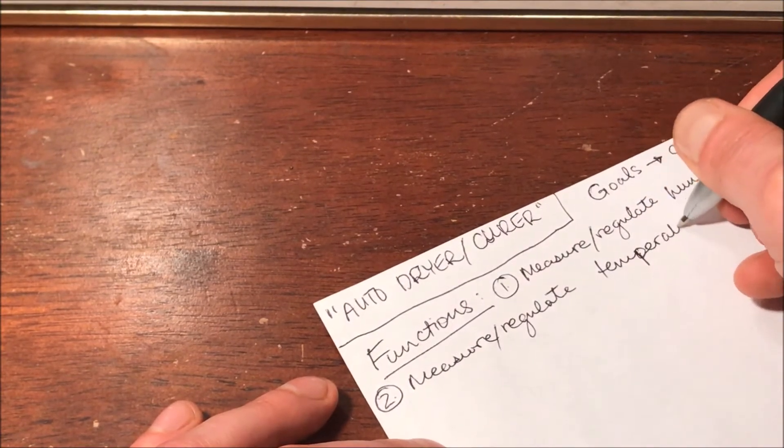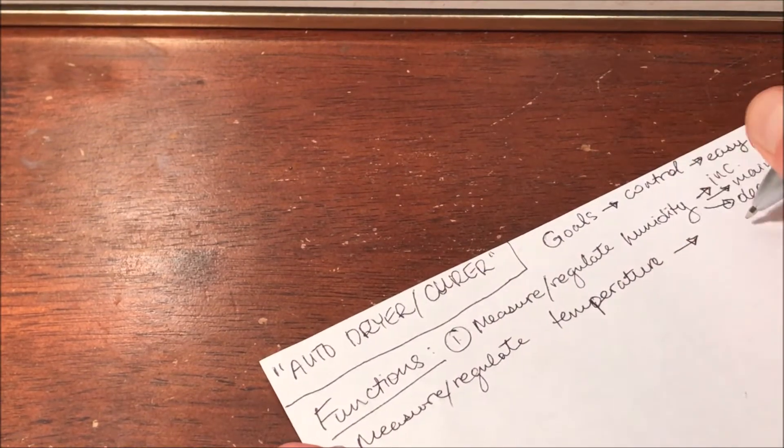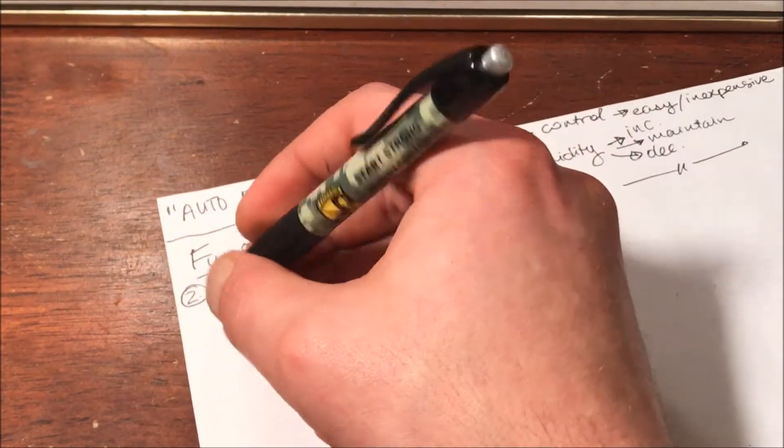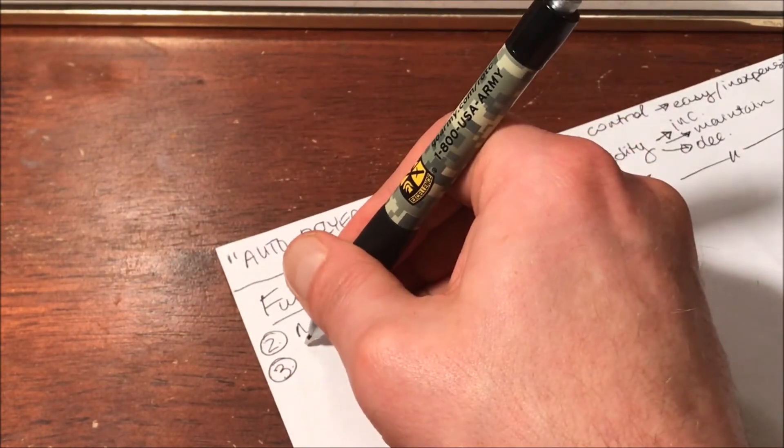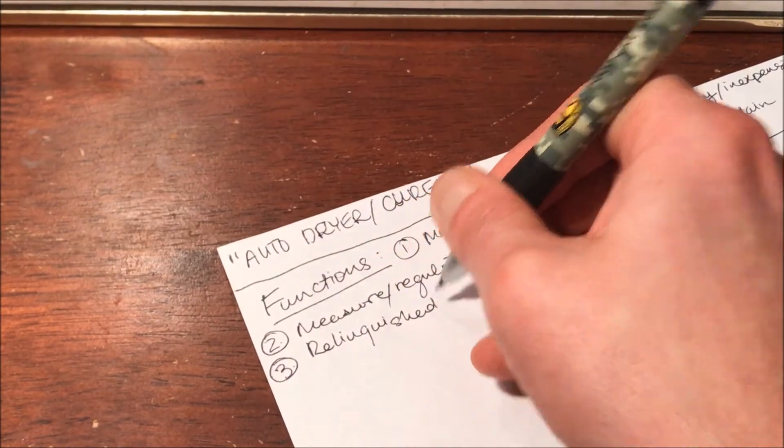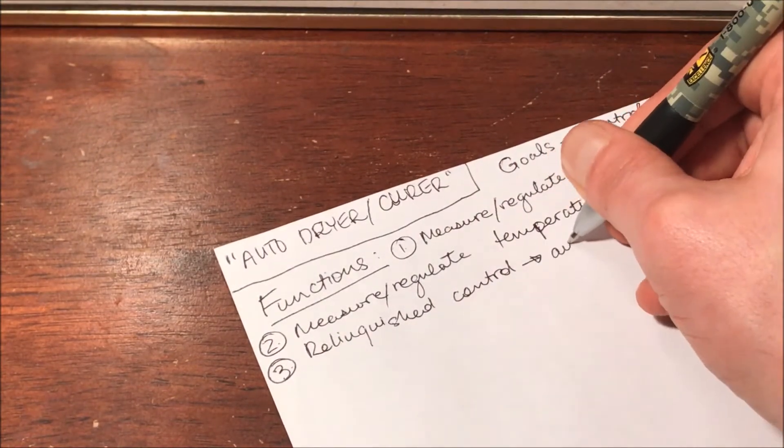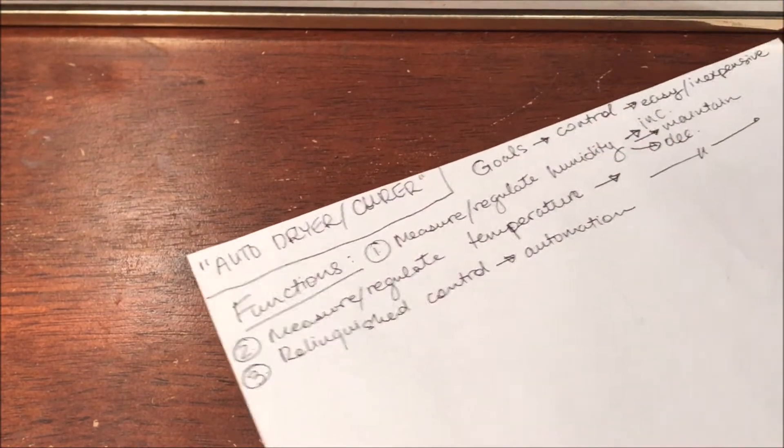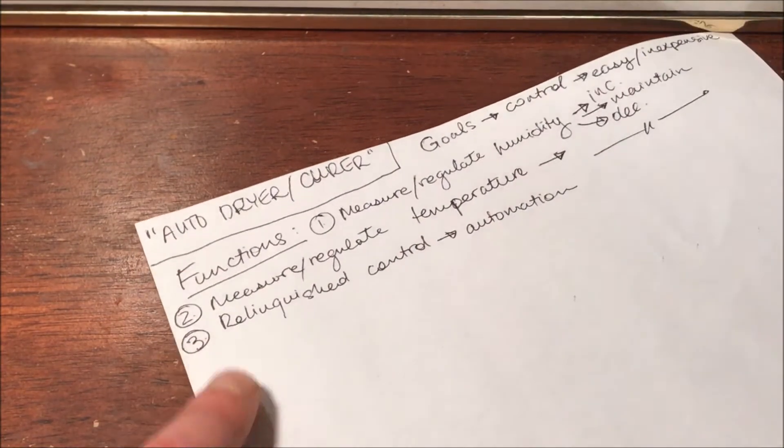And why not also do the same thing where we'll measure and regulate temperature. Sorry, sometimes I start writing through the camera and that never goes well. And with that, it's the same stuff as we have here. Increase, maintain, and decrease. And finally, let's include that favorite concept of permaculture design, which is relinquish control. And all that basically means in this case is some sort of automation. All right, so there's the three functions that we're going to start with for this design.